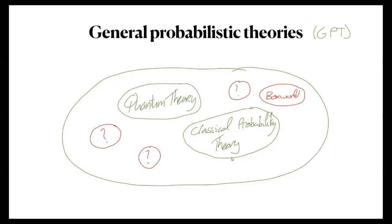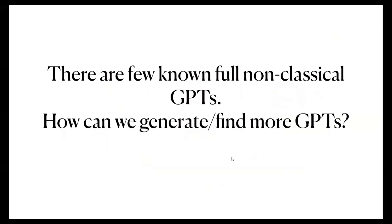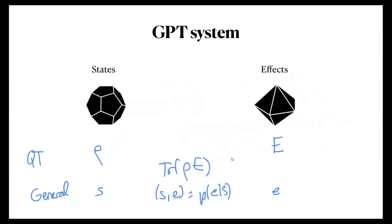So what are we describing when we talk about GPTs other than quantum theory? The statement I'm making is there are few known full non-classical GPTs. How can we generate or find more GPTs? To do this, I want to explore just single systems. This talk will be just about single systems, and towards the end I'll discuss composite systems and suggest directions for future work.